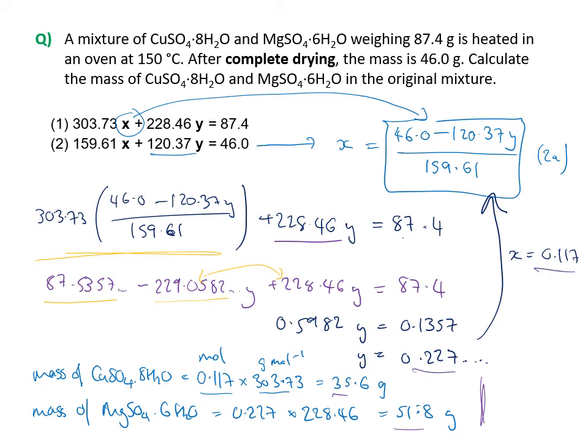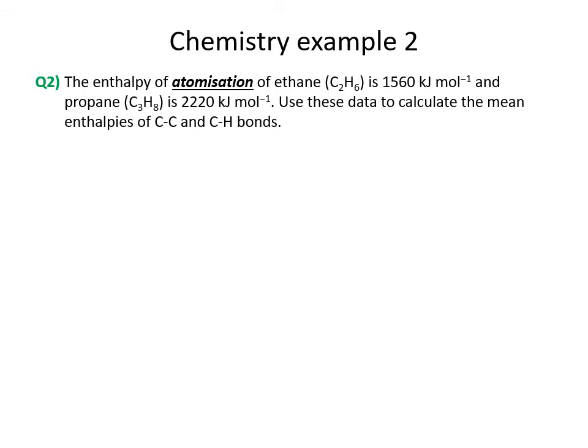You can check by substituting these masses back into the original equations. One key piece of advice: don't over-complicate things. Some people try to work through the moles of water and make mistakes. Stick with the number of moles of the actual species — copper sulfate and magnesium sulfate — rather than anything to do with water.